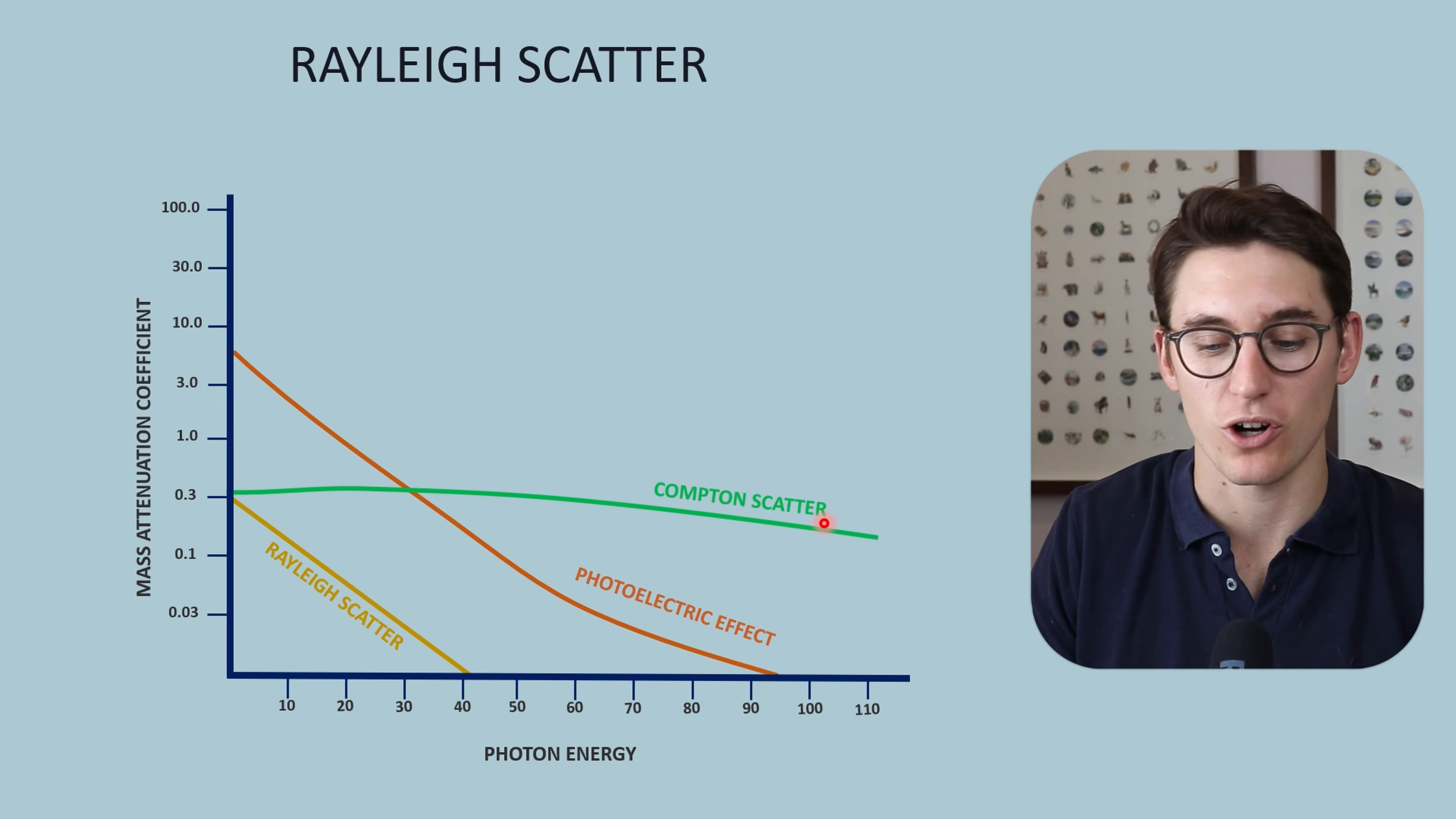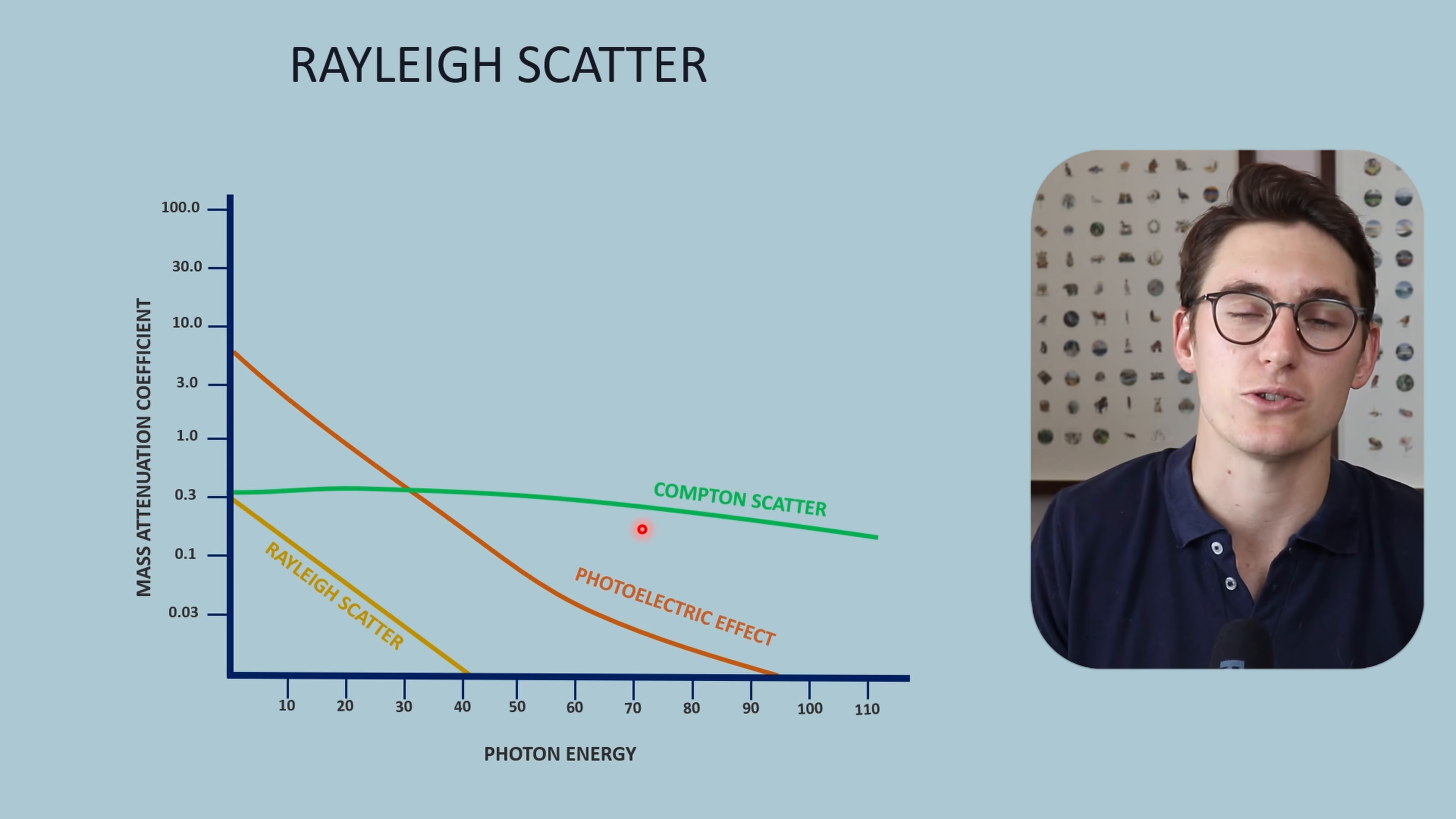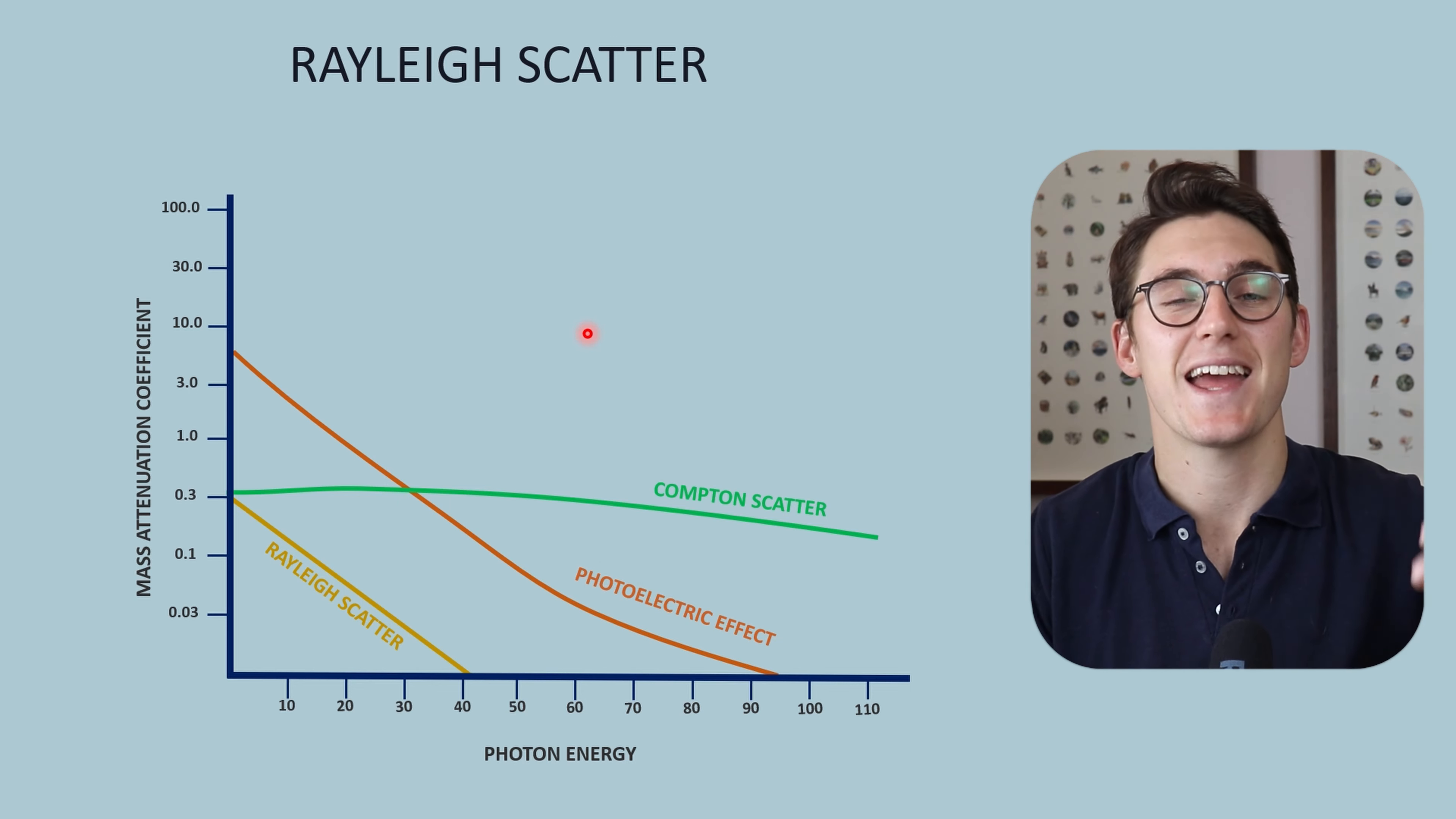Let's look at this finally on our complete graph that includes our photoelectric effect, our Compton scatter, and Rayleigh scatter. We see that Rayleigh scatter decreases with photon energy. As our photon energy increases, our frequency increases, our wavelength shortens, and therefore the likelihood of Rayleigh scatter to occur decreases exponentially. When we look at diagnostic energy ranges, say between 30 and 80, our contribution of Rayleigh scatter at these low energy ranges is very small compared to Compton and photoelectric effect. This is not a linear scale on our y-axis. At a photon energy of 30, we've got a mass attenuation coefficient of 0.03 for Rayleigh scatter and 0.3 for Compton and photoelectric effect—10 times higher.